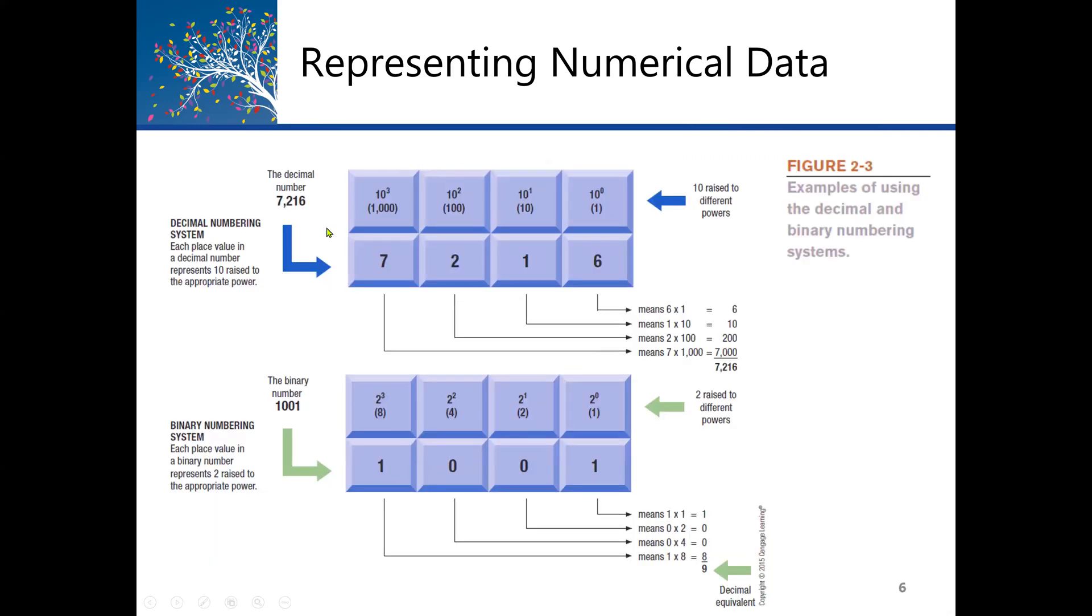In both systems, the position of the digit will determine the power to which the base number, such as ten or two, is raised. The first example here in the diagram, we have a decimal number system: 7,216. The smallest unit is six. The next is one, which is in the tens position. Then two is in the hundreds position, and seven is in the thousands position. To represent this data based on the position of each digit, we start from the rightmost because that is the smallest unit.